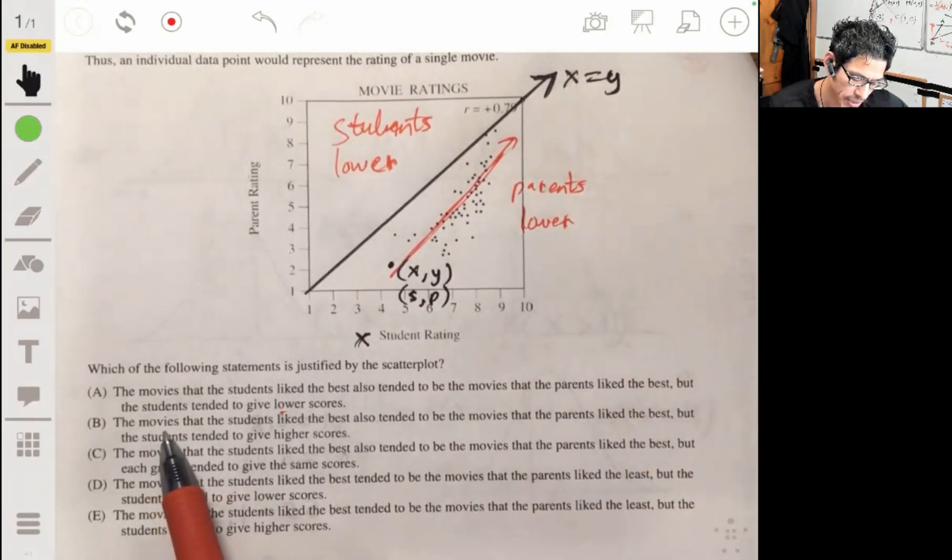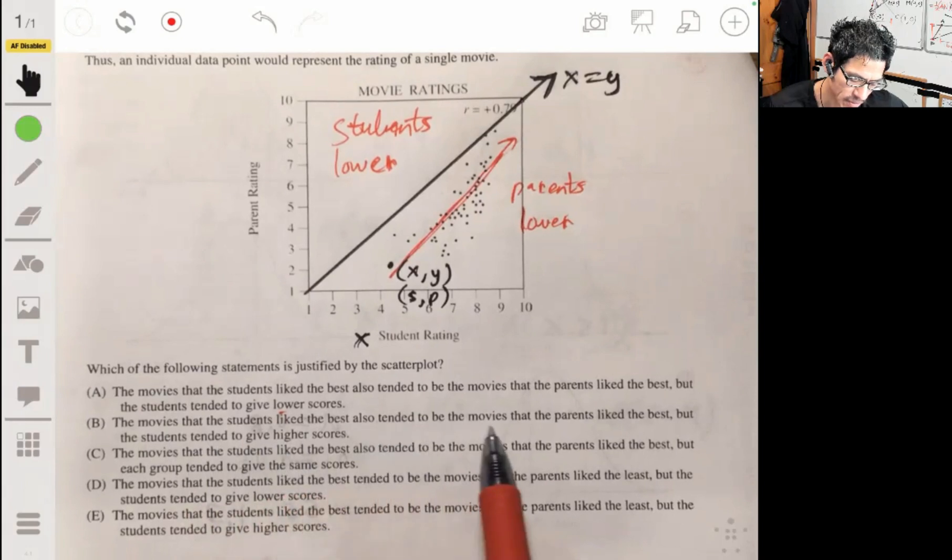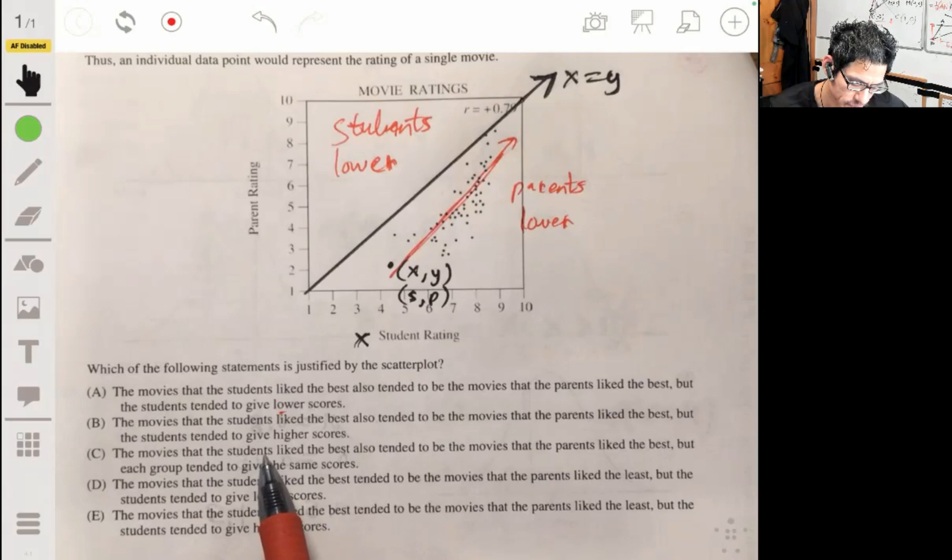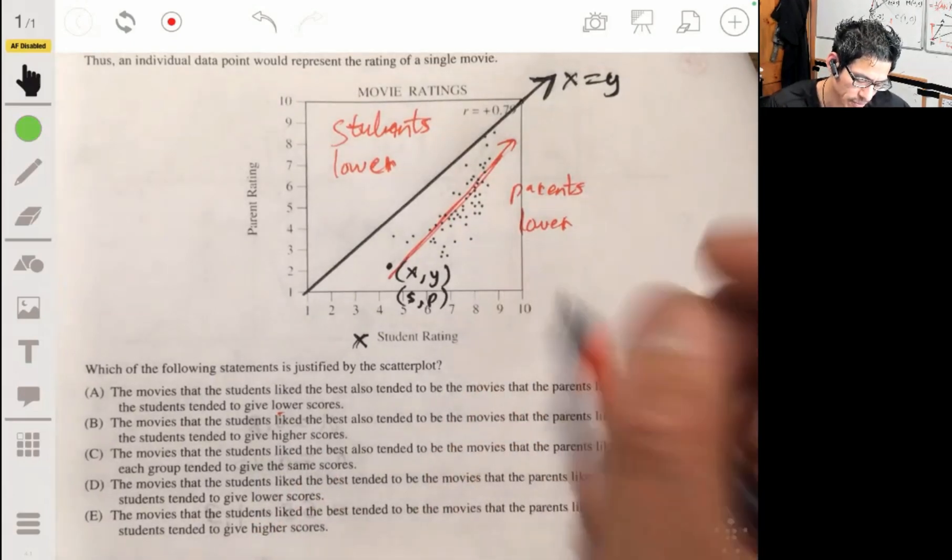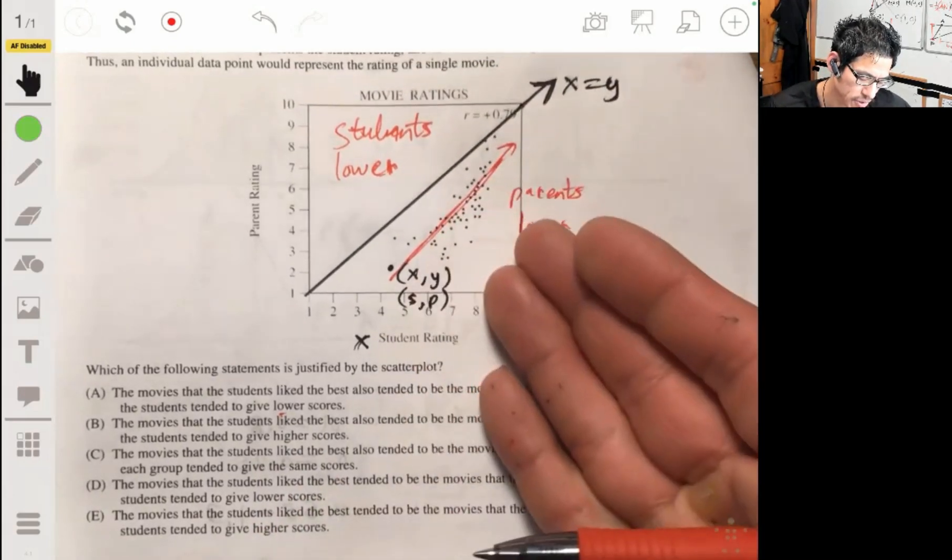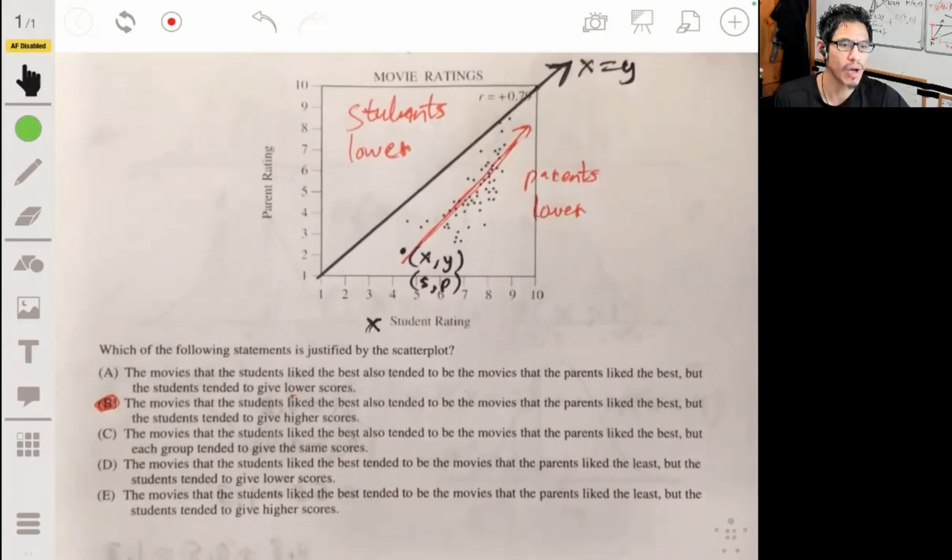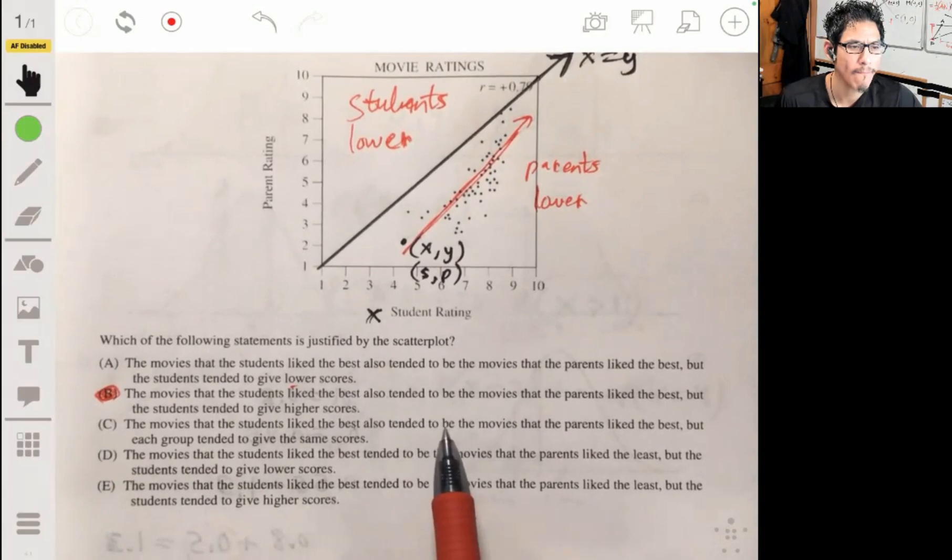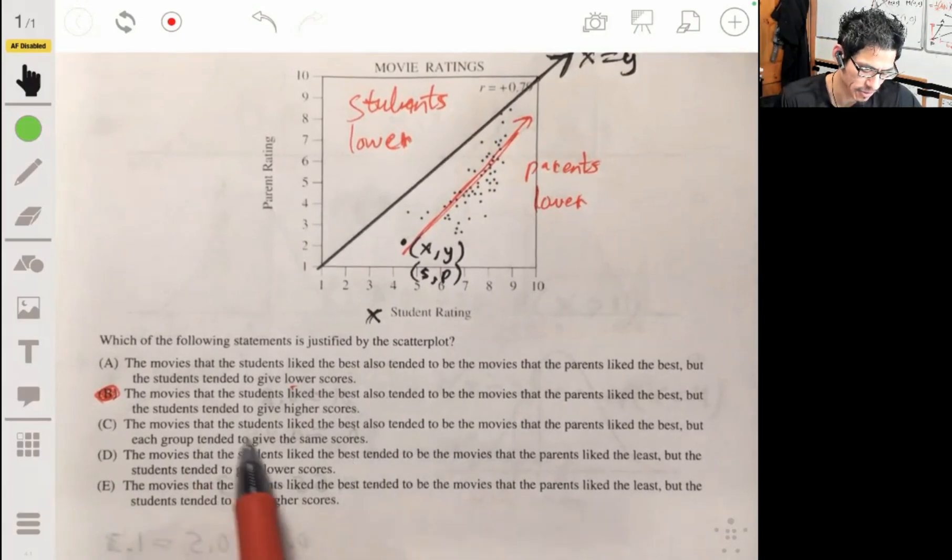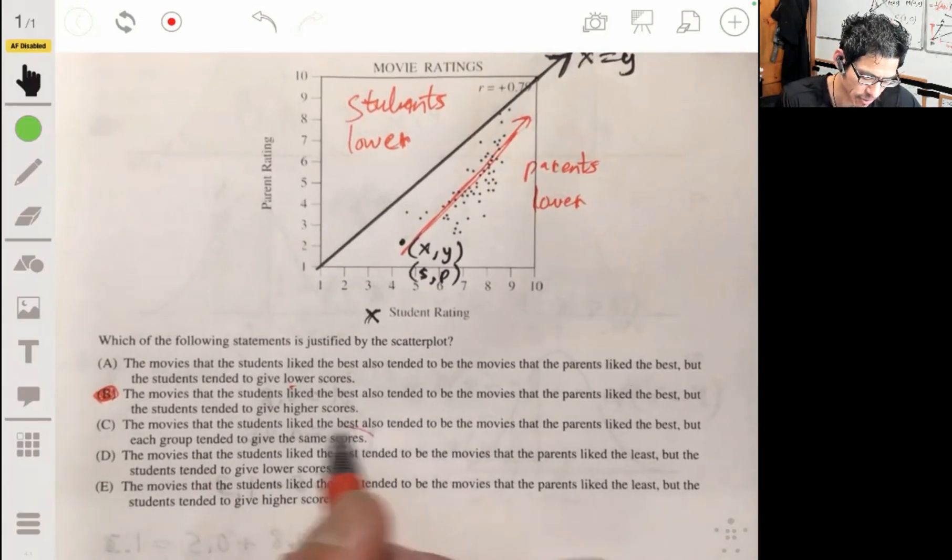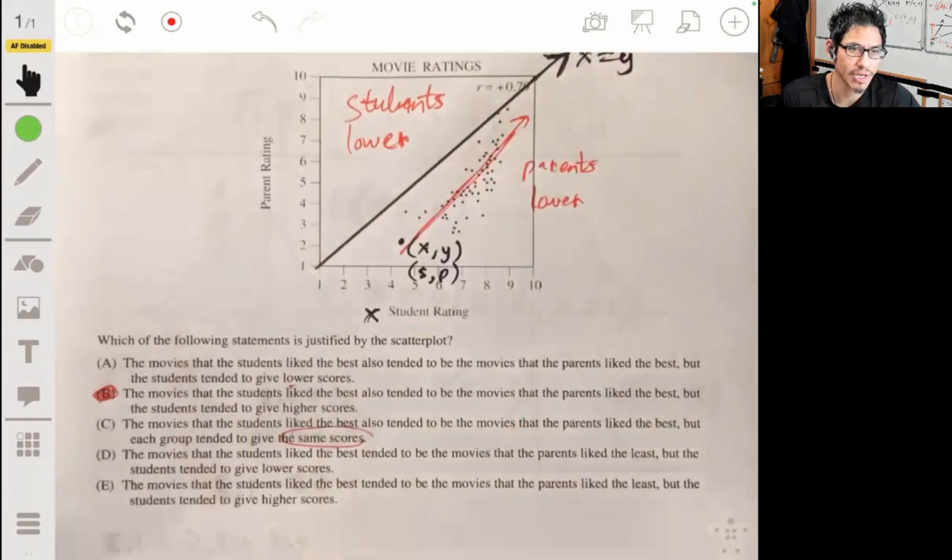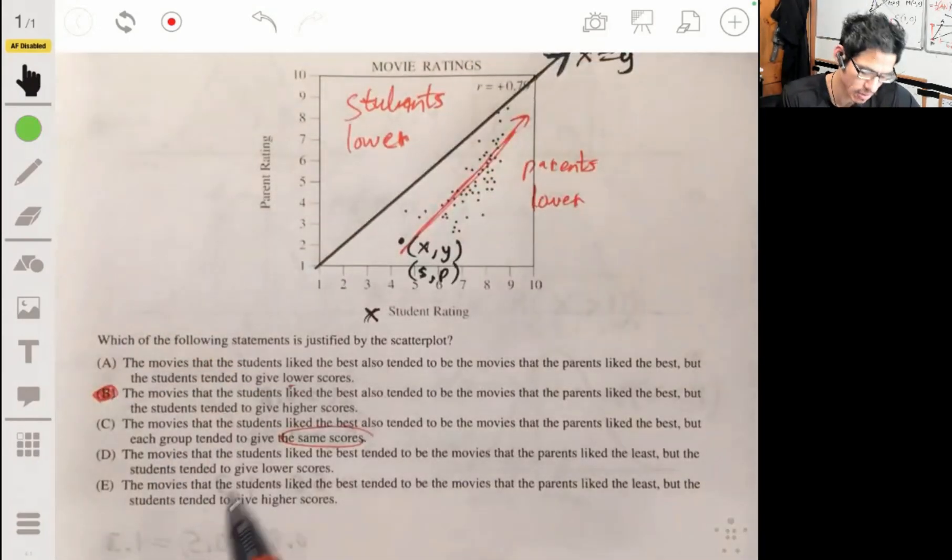Okay, so B, the movies that students like the best also tend to be the movies that parents like the best. But the students tend to give higher scores. Okay, so that's what we're talking about. So parents lower scores, or students higher scores. So it's going to be B. I mean, I can show you why it's not C, because it's not the same scores, because if it was the same scores it'll be all along the diagonal.